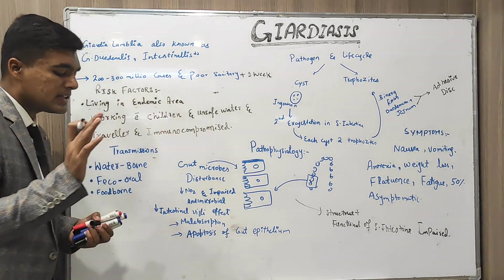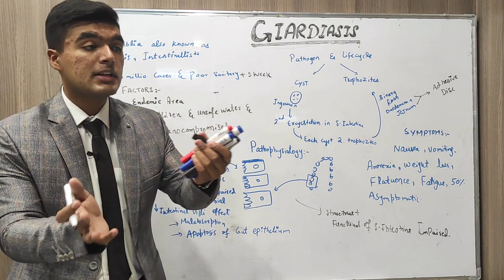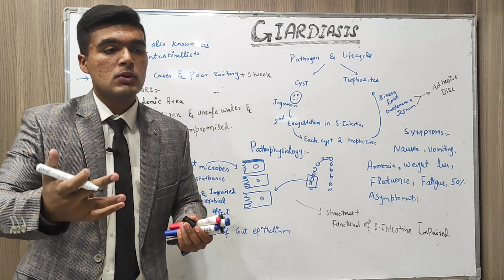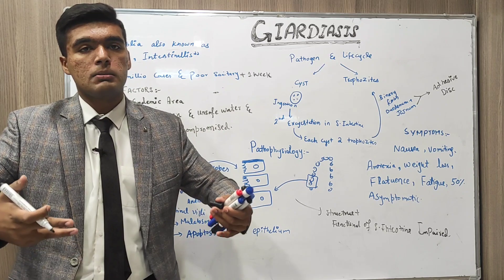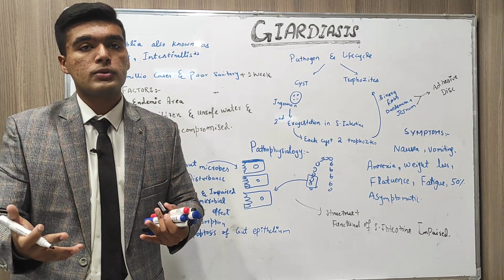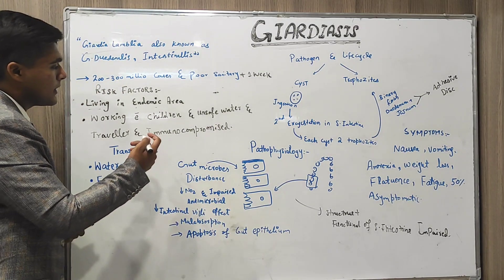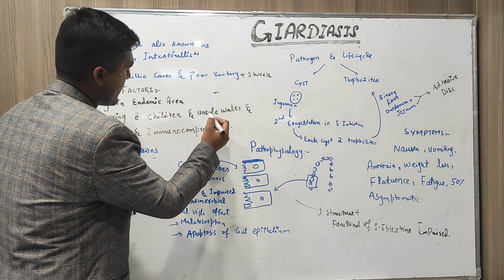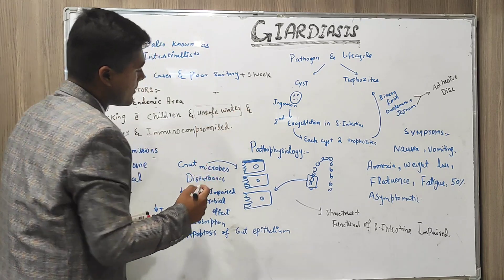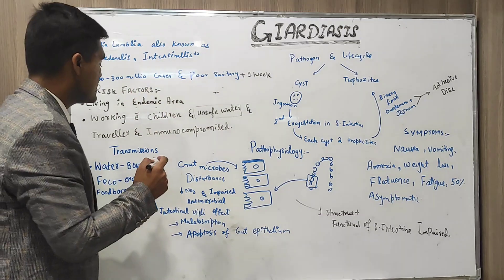The major risk factor is poor sanitary conditions and living in an endemic area. If you are working with children, you have chances of contact with feces, and through the fecal-oral route, chances of ingestion of cysts also increases — that is also a very major risk factor for development of Giardiasis. Unsafe water, meaning water unfit for drinking, leads towards Giardiasis.